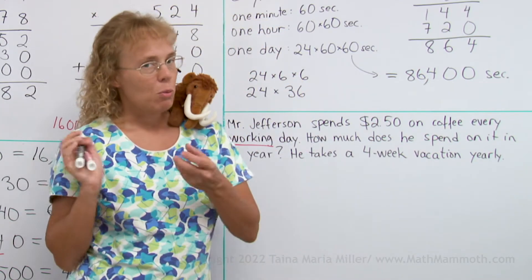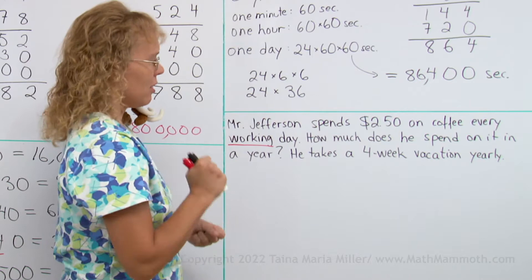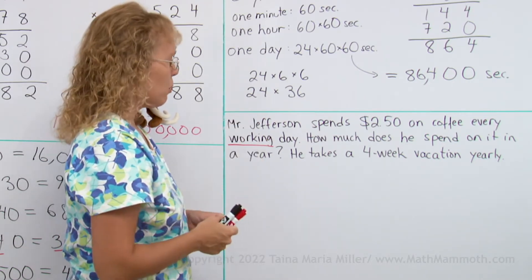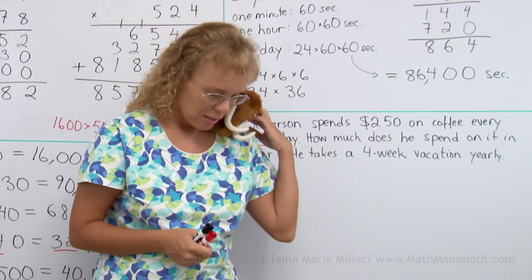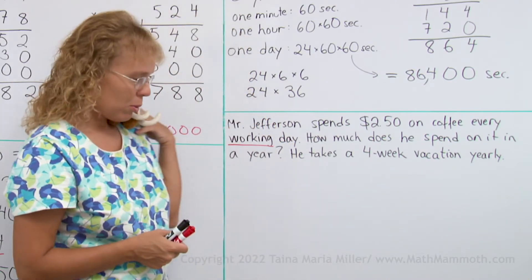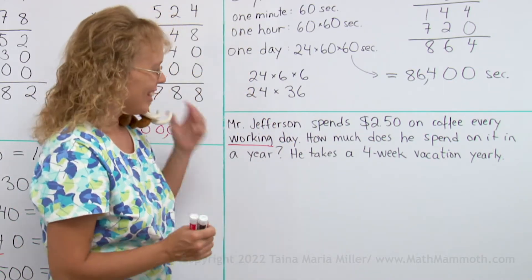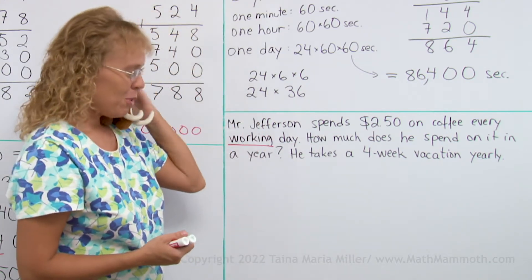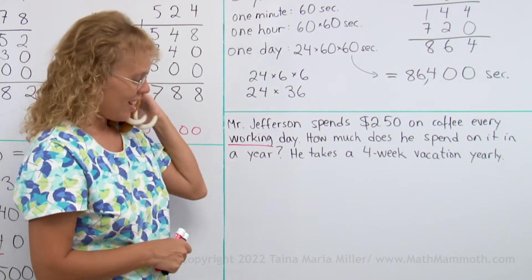I think we're gonna use these weeks here to help us figure this out. He spends $2.50 on coffee every working day. Matthew? Oh, why not blueberry juice? Well Matthew, that's not commonly available. If you want blueberry juice, then you make it for yourself and drink it every day, okay?